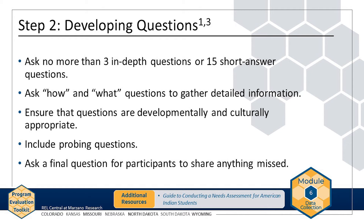Next, develop interview or focus group questions that will elicit information to help you answer the evaluation questions you identified in Step 1. Limit the number of interview or focus group questions to three in-depth questions — for example, what were the obstacles to using the program? — or 15 short answer questions — for example, what did you like best about the program? You may also use a manageable combination of in-depth and short answer questions. Questions should be brief and concise. Rather than asking closed-ended questions such as yes/no questions, ask open-ended questions such as how and what questions, because the purpose of interviews and focus groups is to gather detailed information.